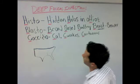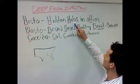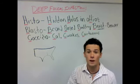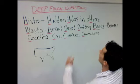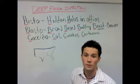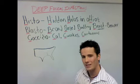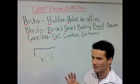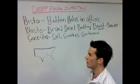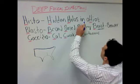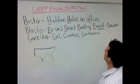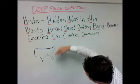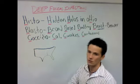Histo has hidden halos in Ohio. Where are they hidden? They're hidden in the macrophages. The halos describe the capsid-like thing around the fungus, but it's not a capsid — it's just capsid-like. It especially looks like a halo under the microscope. And Ohio refers to the Ohio and Mississippi River valley region.